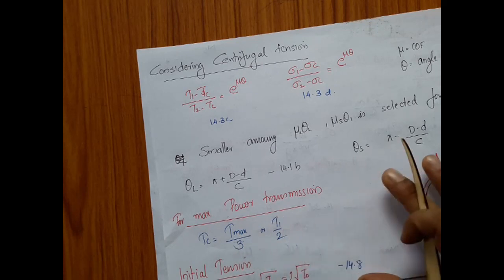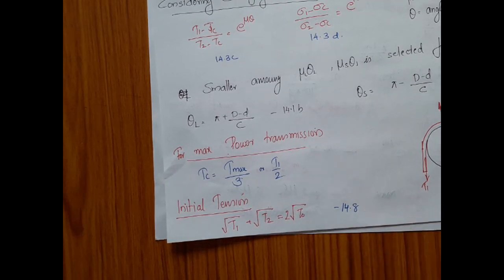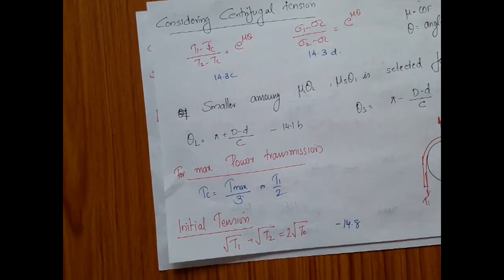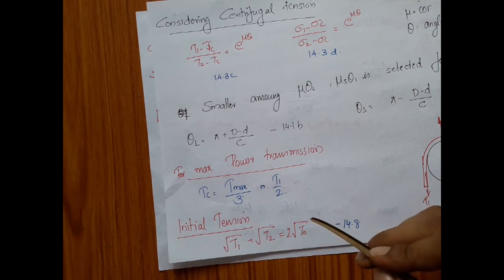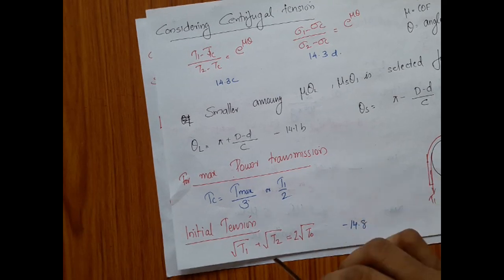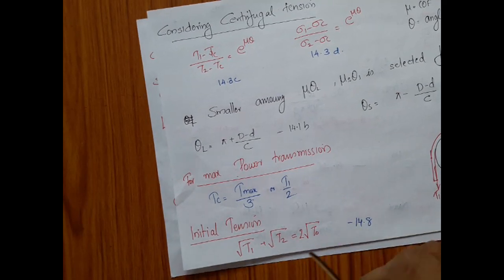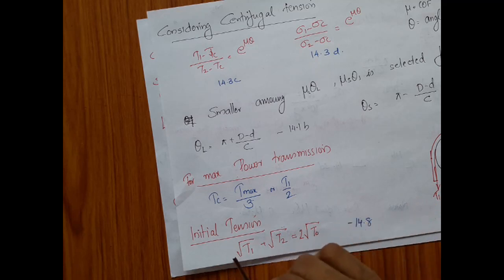Initial tension is a very important term. The equation is: the square root of T1 plus the square root of T2 equals 2 times the square root of T0, given as equation 14.8. When we assemble a belt, we must give some initial tension without which it will not work properly. In the tighter side, the T1 value is reached from T0, and the opposite happens in T2. So initial tension is very much required when we assemble the belt, and we will consider it during design.